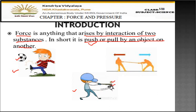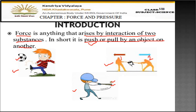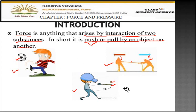Force is applied by the boy with the help of the bat on the ball. In the third diagram, two people are doing tug of war. The first person is pulling the rope towards himself and the second person is also pulling the rope towards himself — both are applying force on the rope. So these are some examples of force: a push or pull by any object on another object, requiring two substances interacting with each other.